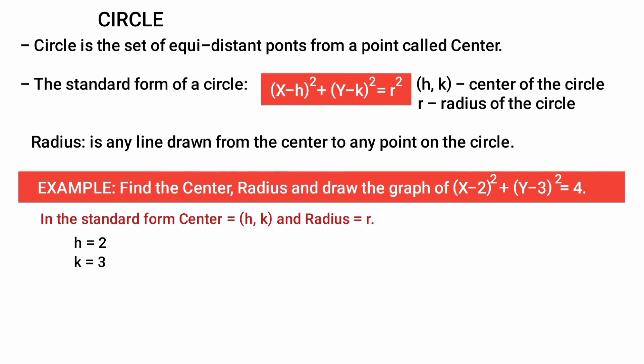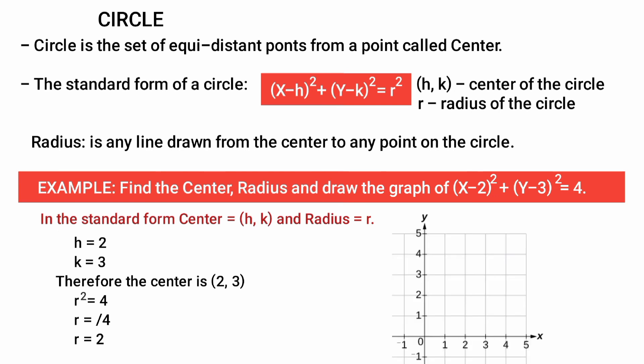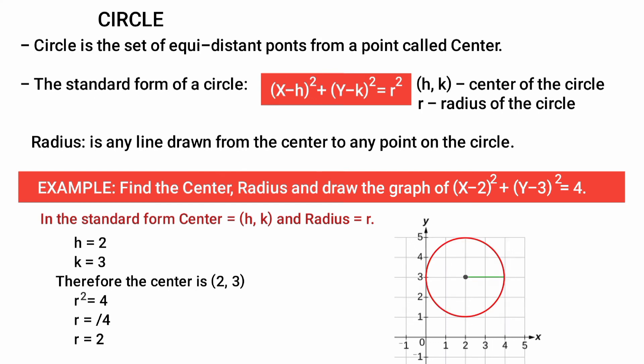H is equal to 2, K is equal to 3. So the center is at the point (2, 3) — that is the X value is 2 and Y value is 3. R squared equals 40. To draw the graph, click on the point (2, 3) as the center value. You can see the radius of the circle and draw the full circle using the formula.